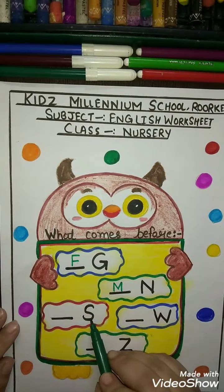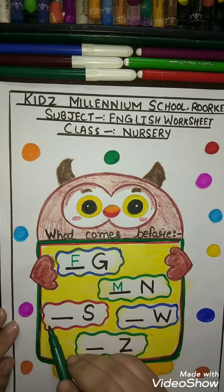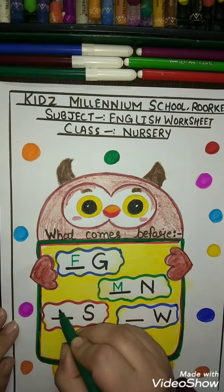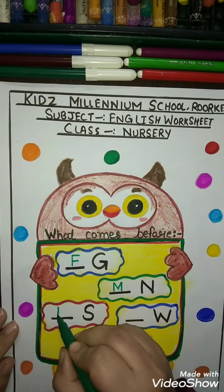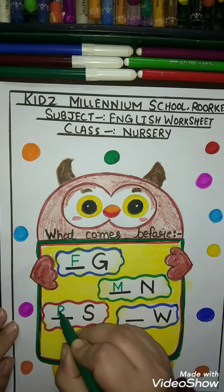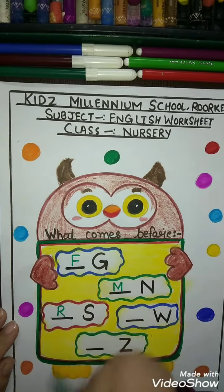Now S for sun. So what comes before S? R for rabbit. So you will write R like this.